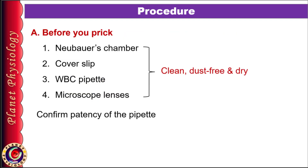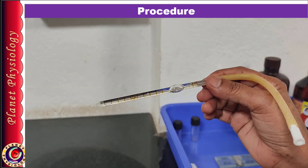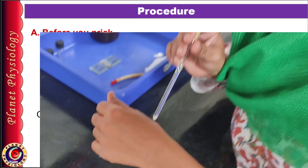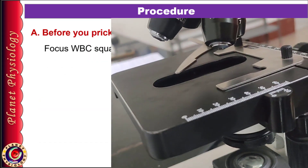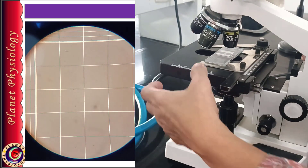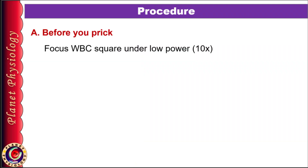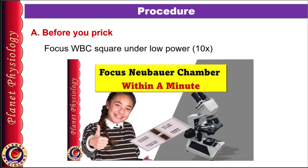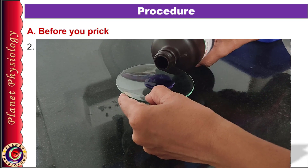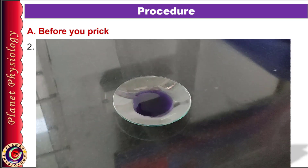Before taking the finger prick, ensure that the chamber, coverslip, and pipette are dry and clean. It is absolutely essential that all instruments, including the microscope, are clean and dust-free. Otherwise, dust particles can interfere with WBC counting and result in a falsely elevated count. Also, check the patency of the pipette by blowing through it — if you feel an air current on the back of your hand, the pipette is patent. Now focus the WBC square under the low power 10x objective and confirm it is clean, then remove it without disturbing any microscope settings. This saves time when you are ready with the sample. Now take adequate WBC diluting fluid in a watch glass. This is an essential step before taking the finger prick, which can prevent your blood from clotting within the pipette.